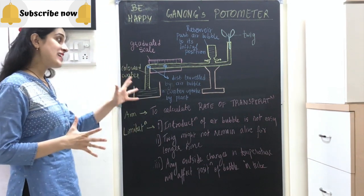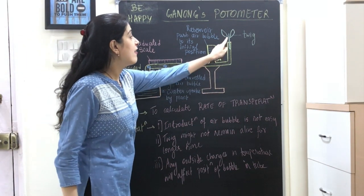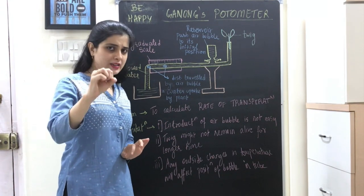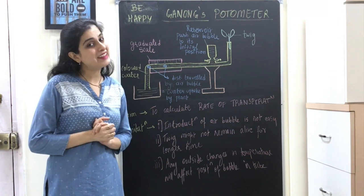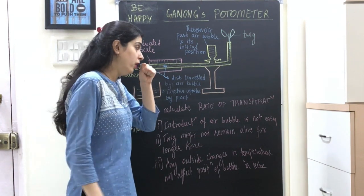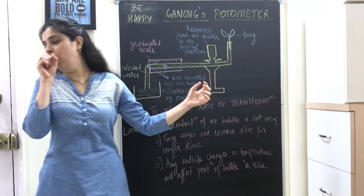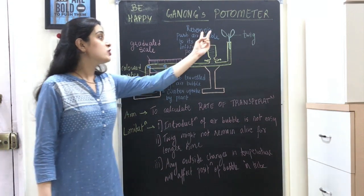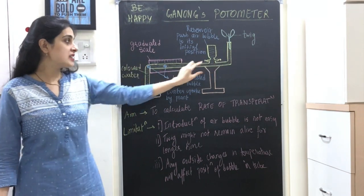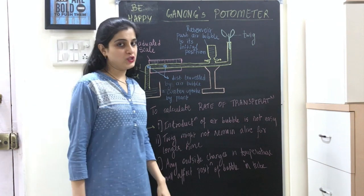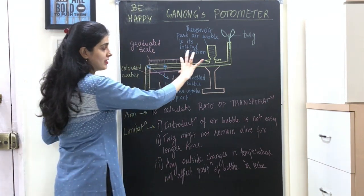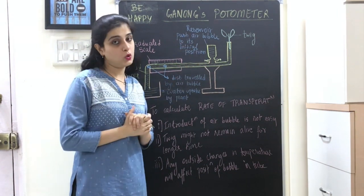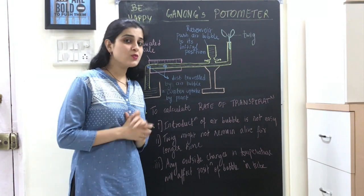The potometer has a bent glass capillary tube — capillary meaning very small in diameter. The horizontal arm of the bent capillary tube has two attachments: first, a graduated scale with markings; and second, a reservoir for reserve water. The entire apparatus is filled with colored water, and I have a beaker also filled with the same colored water. At one end I have put a twig.